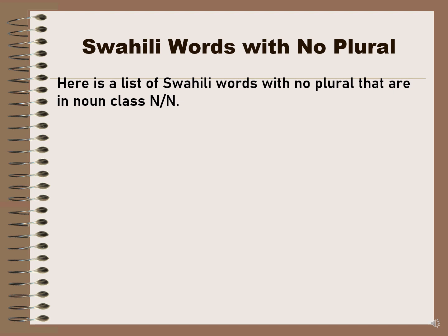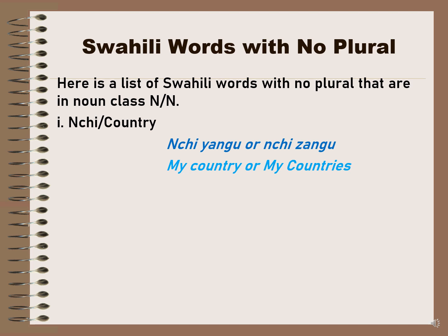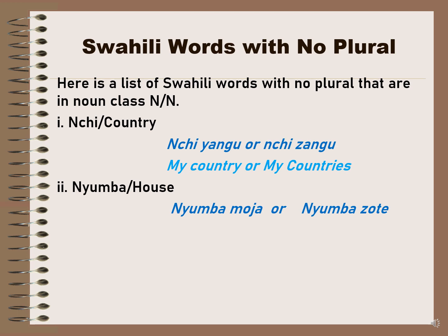Here we have examples of Swahili words with no plural and how they are used in sentences. For 'nchi' meaning country: 'nchi yangu' is my country (one country) and 'nchi zangu' is my countries (more than one). For 'nyumba' meaning house: 'nyumba moja' is one house and 'nyumba zote' is all houses. You can see that 'nyumba' does not change — it stays the same in both singular and plural. The context and accompanying words tell you whether it is singular or plural.